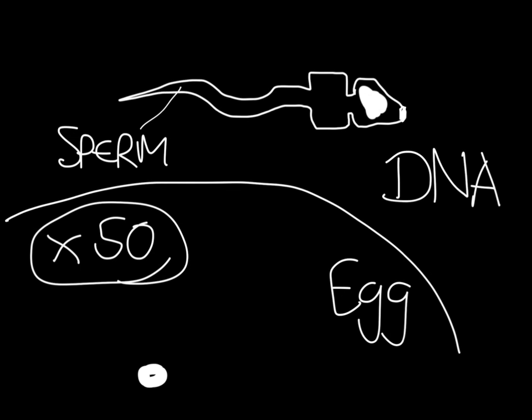The egg is so big because it contains an awful lot of food. The food is to help the developing organism grow. So, in a brief summary, that's gametes for you — really quick about animals. Obviously, we still need to look at plants.